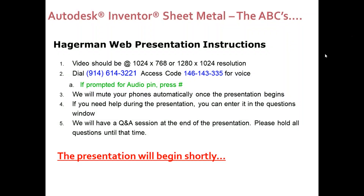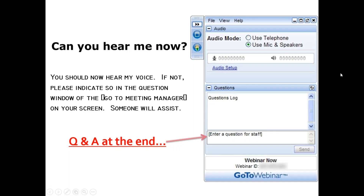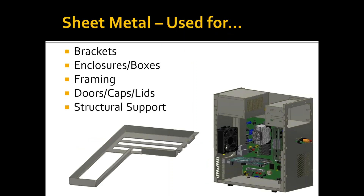Thank you Ashley. Greetings everyone, let's get the ball rolling right into this. For today's presentation, as Ashley mentioned, you're here for the Autodesk Inventor sheet metal webinar. We're going to cover the ABCs of starting from your basic sketch, going through feature modeling capabilities, and into flattening and the options and controls you have there. Kevin Bosch is running the background Q&A, so let's keep it going.